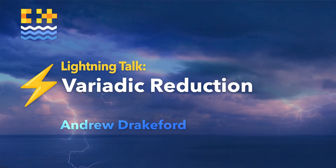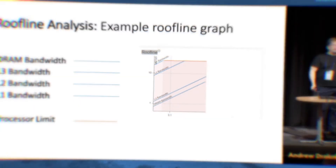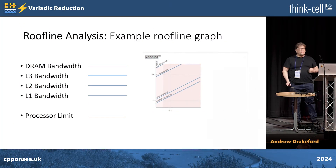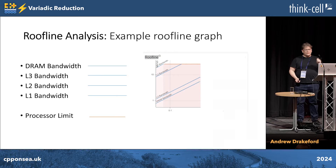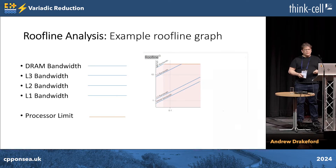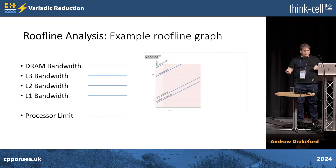We're going to try and speed up reduction by making it variadic. First, we're going to consider roofline analysis. This is a plot of the flops of the function on the y-axis versus the arithmetic intensity — that's the flops per byte on the x-axis.